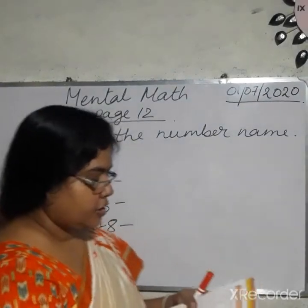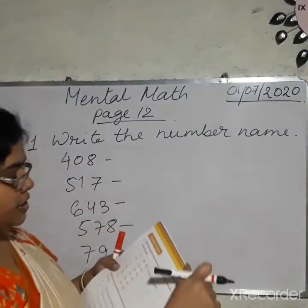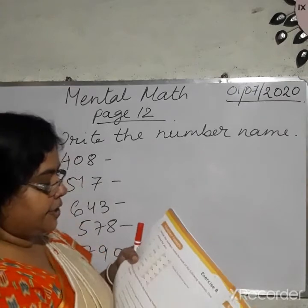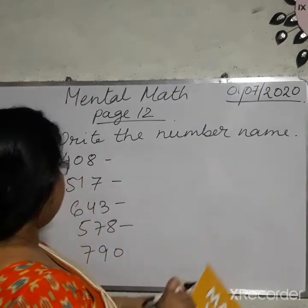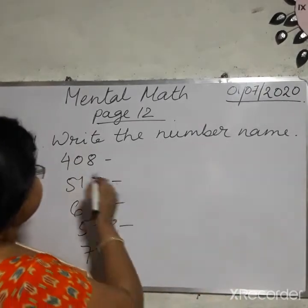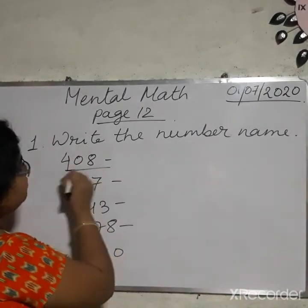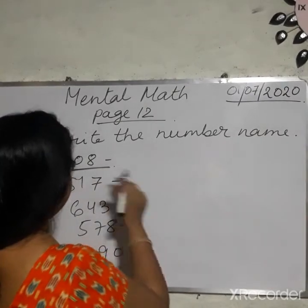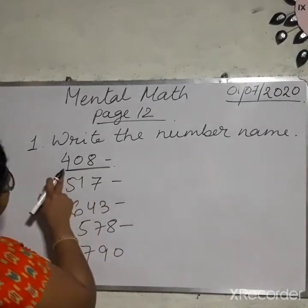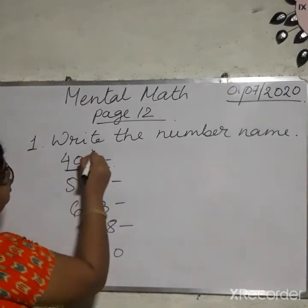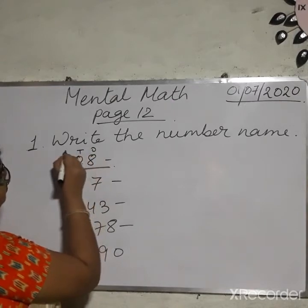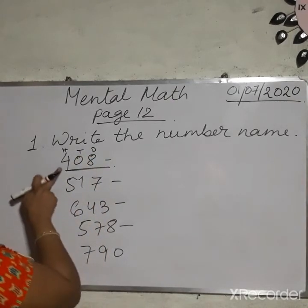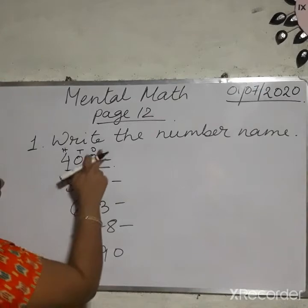Children, the first one is write the number name. Write the number name. Here you have to write in words — that means spelling. First look: 408. This is 408.